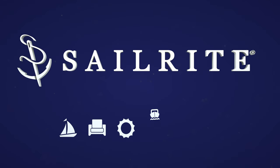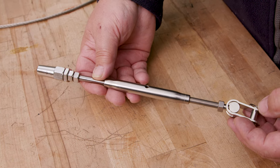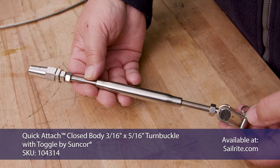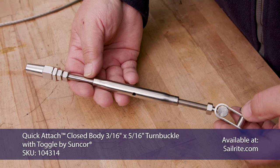Visit Sailrite.com for all your project supplies, tools, and instructions. In this video, we're going to show you how to install a wire cable into the Suncor Quick Attach 3/16 by 5/16 inch turnbuckle.